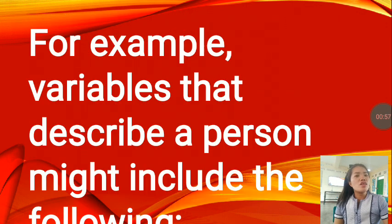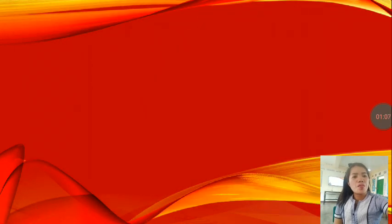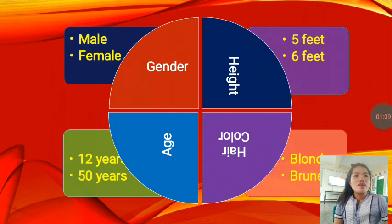For example, variables that describe a person might include the following. You have gender. For gender, for instance, we have male and female, although it's already a little bit obsolete nowadays because we have more than two options for gender already.